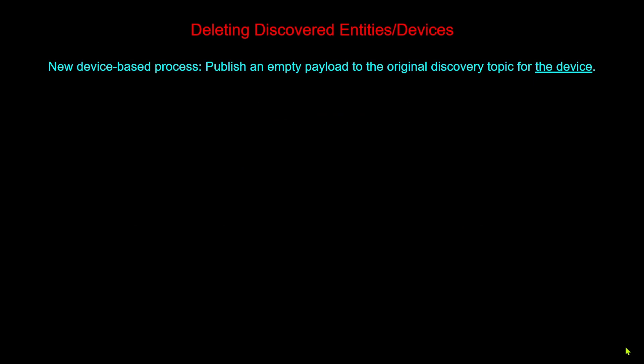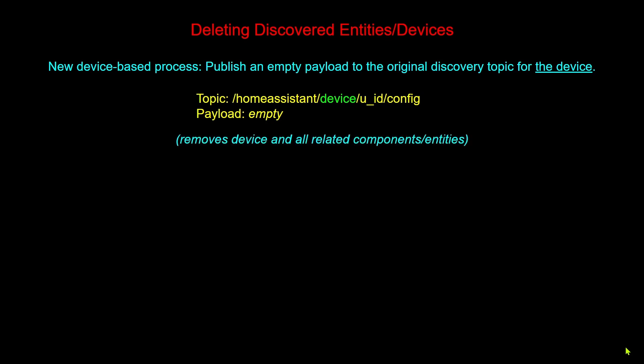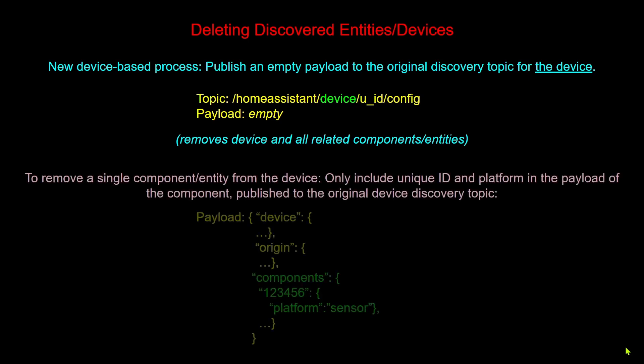Under the new device-based method, you publish an empty payload to the original device discovery topic. This removes the device and all related entities or components. But if you just want to remove a single entity or component from a device but not the other entities of the device itself, you use the original discovery payload but for the component you want to remove you only specify the original unique ID and the platform for that entity and no other keys. This will remove just that entity while leaving other components and the device intact.